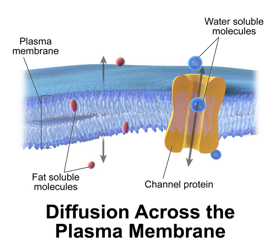Despite the numerous models proposed prior to the fluid mosaic model, it remains the primary archetype for the cell membrane long after its inception in the 1970s. The membrane is a lipid bilayer composed of hydrophilic exterior heads and a hydrophobic interior where proteins can interact with hydrophilic heads through polar interactions, but proteins that span the bilayer have hydrophobic amino acids that interact with the nonpolar lipid interior. The fluid mosaic model enhanced the study of hydrophobic forces, which developed into an essential tool to describe biological macromolecules.